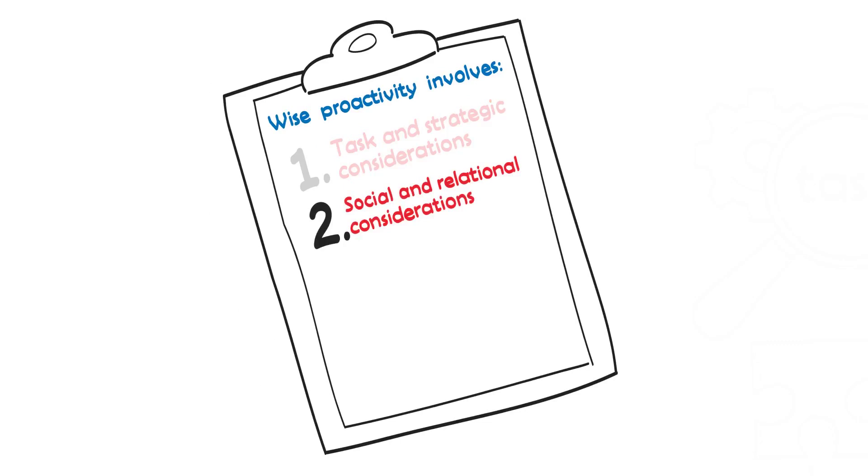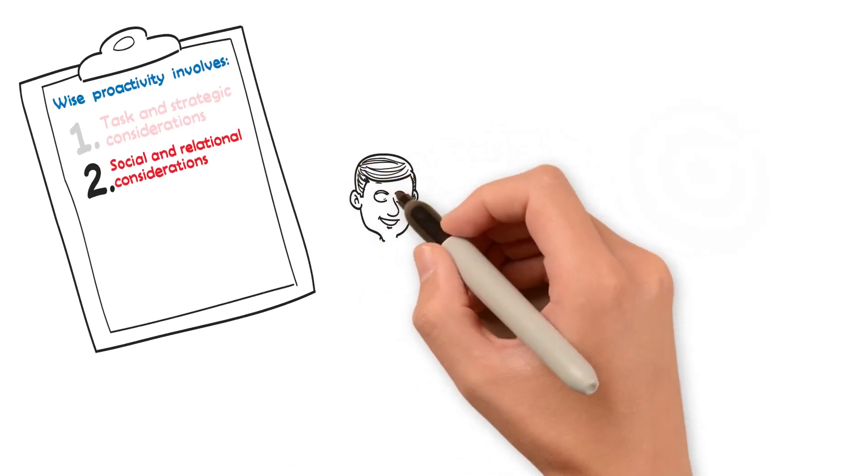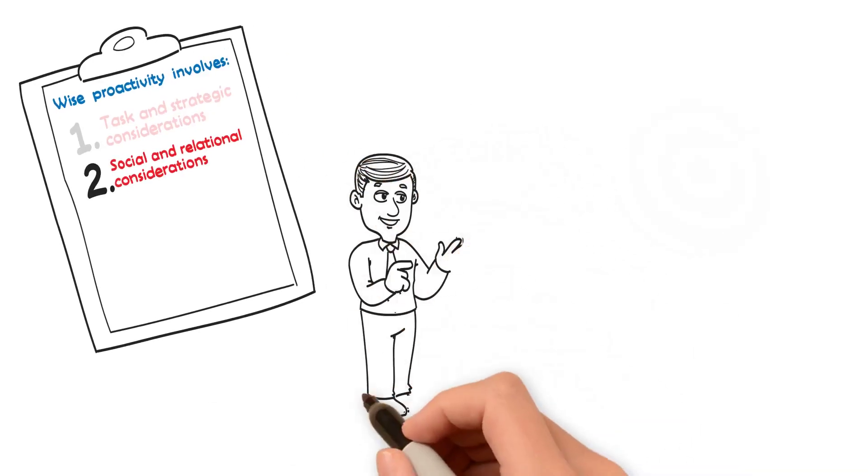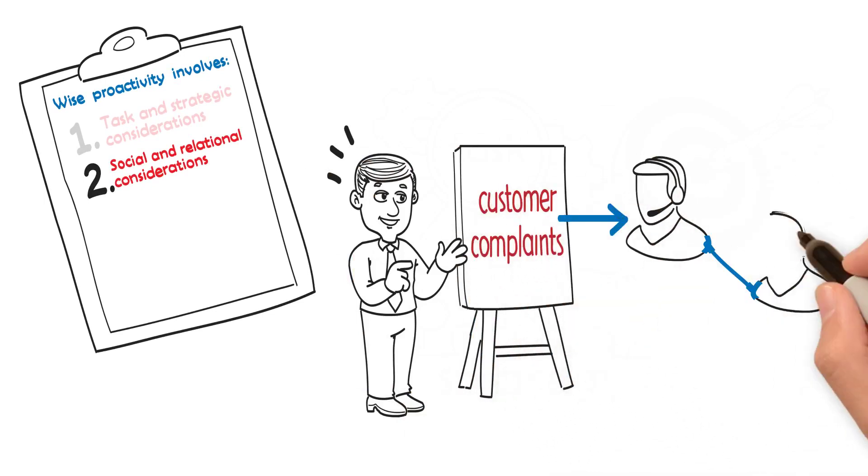Second, wise proactivity involves considering social and relational dynamics. As proactivity actions often affect others, if an employee is suggesting a new way of dealing with customer complaints, this will affect all customer service agents in the team.